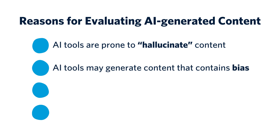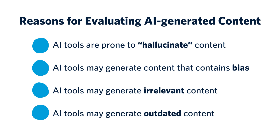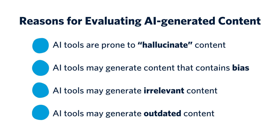Second, AI tools may generate content that contains bias, instead of a balanced or nuanced point of view. Third, content generated by AI tools may be irrelevant, especially if the tool misunderstands the prompt. Lastly, AI content may be outdated instead of current.